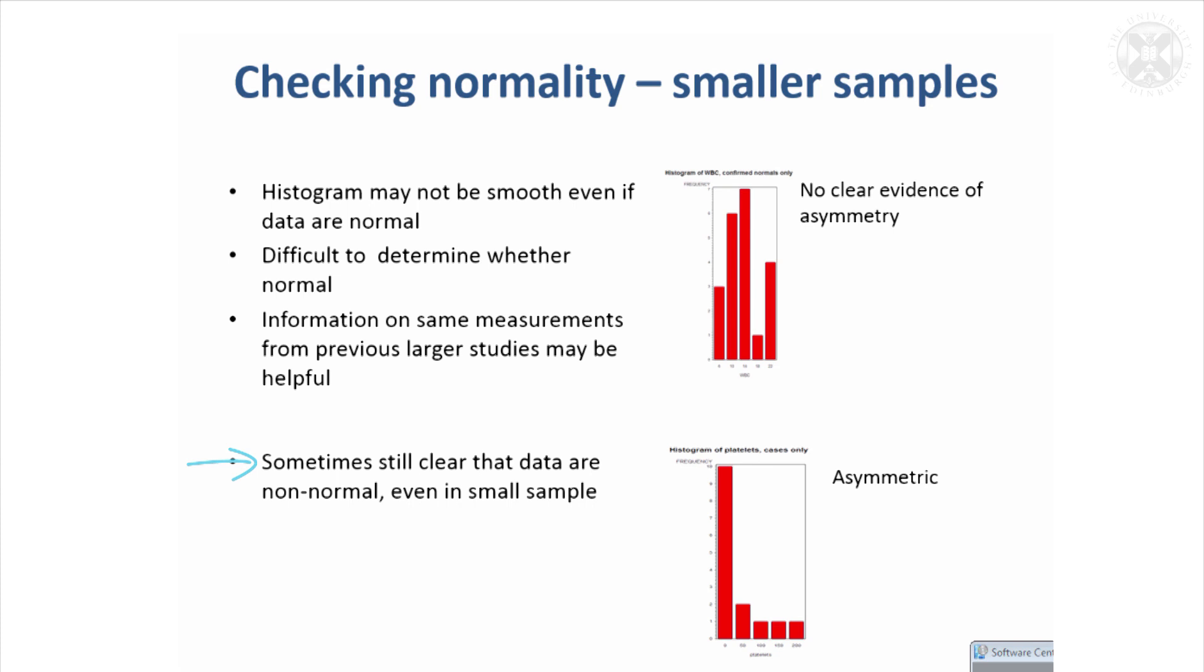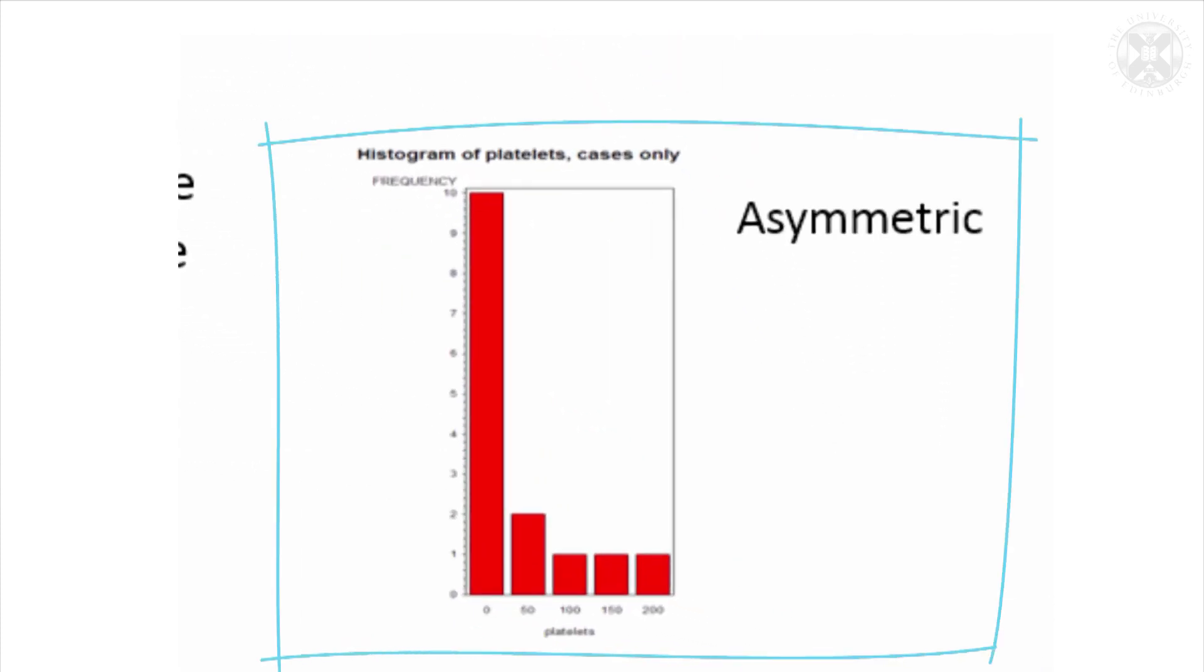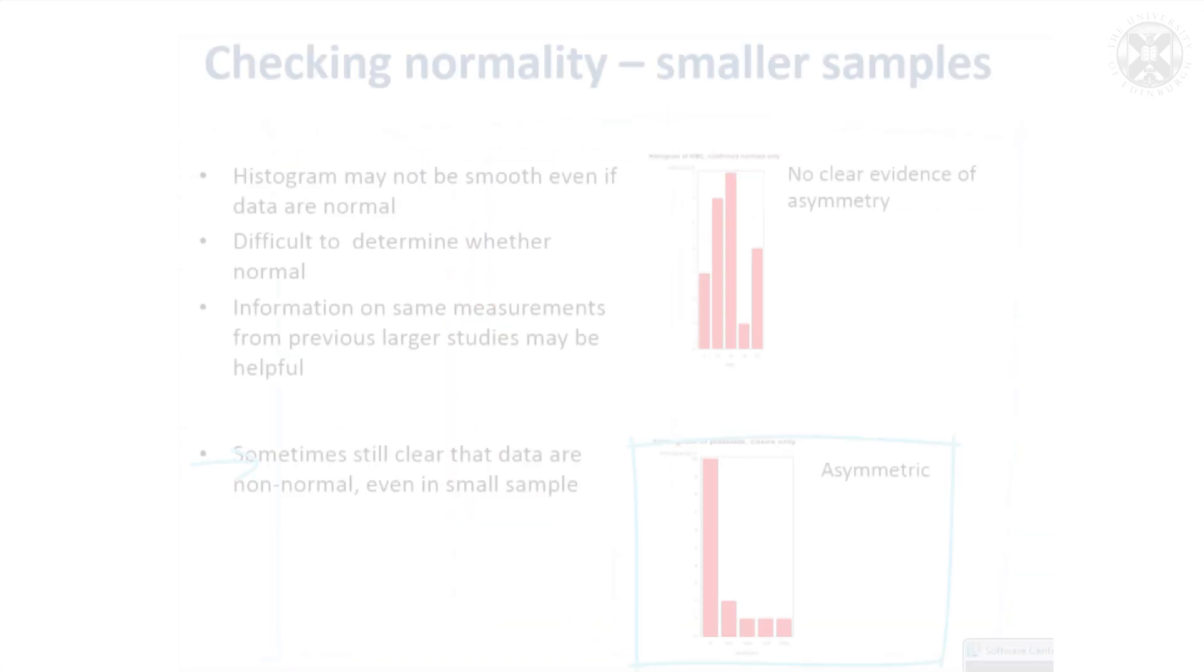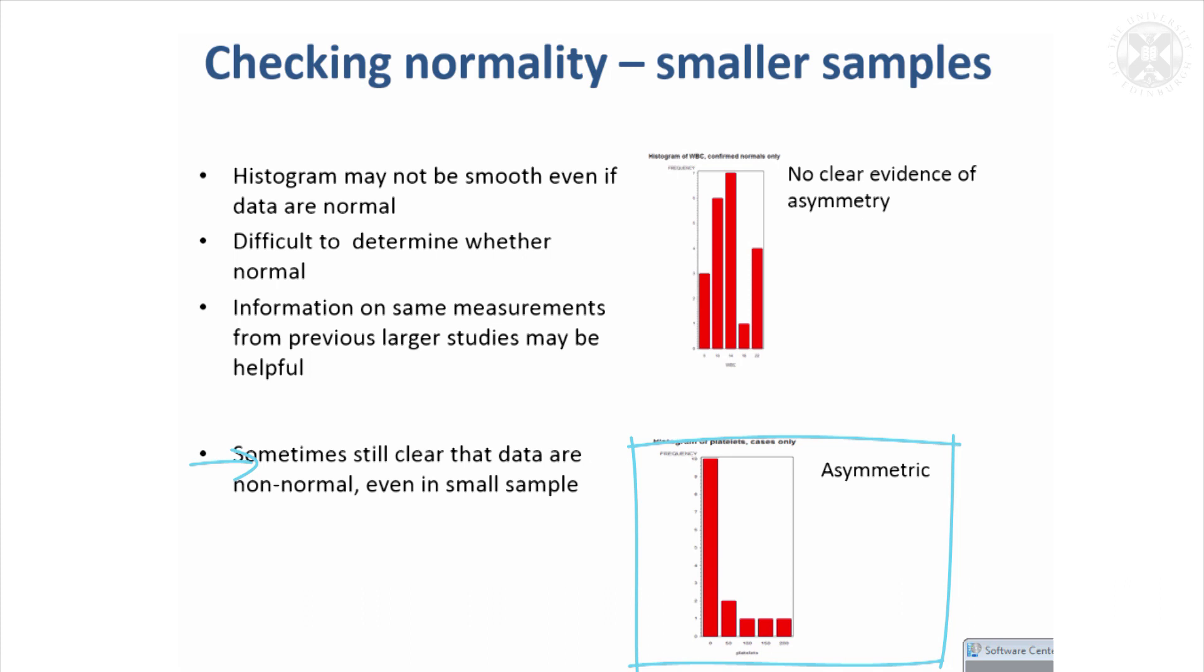In this case, there are about 12 values of zero for this measurement, platelets. You couldn't really imagine if you took another sample that would change into a nice symmetrical distribution. Whereas that one value there could easily just be an oddity, so you can't be sure about that one.